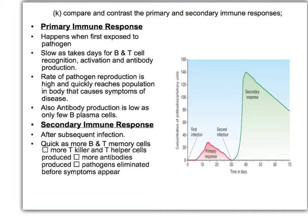This explains why we only get chickenpox once: the first encounter causes the characteristic rash, but we encounter the chickenpox virus many times throughout our life and never get the disease again. The large amount of anti-chickenpox antibody produced in the secondary response eradicates the virus before it reproduces to a level sufficient to cause any symptoms. That concludes our look at the immune system.